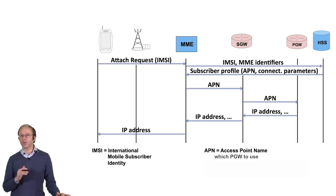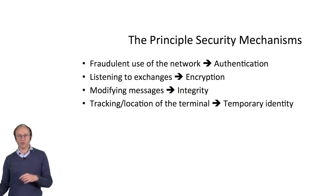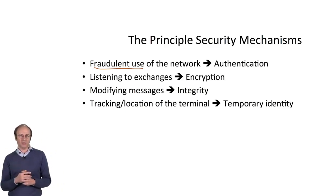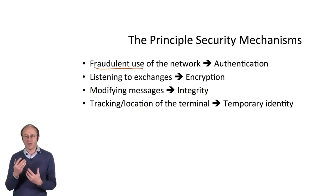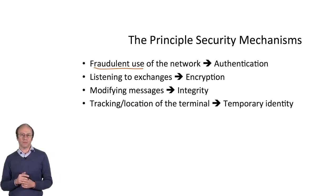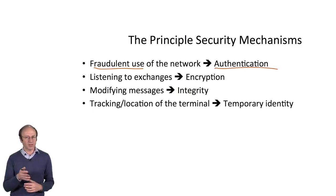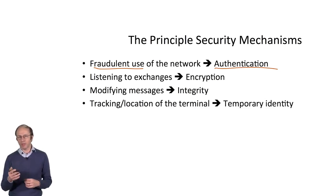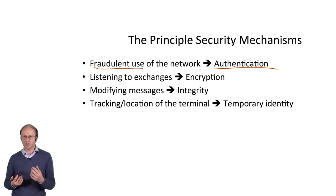What are the possible problems? Let's imagine that I tamper with my terminal so that it sends the IMSI of my neighbor — I could use the network at his expense. The network must verify that when a terminal accesses a network, it corresponds to a valid subscription and a SIM card actually issued by the operator. This is the authentication mechanism. With a receiver set to the frequency of the base station, it is very easy to listen to what it transmits. A person with malicious intent could learn the information transmitted to me — this must be prevented. This is enabled by the encryption mechanism.